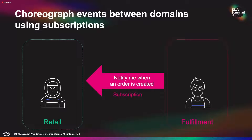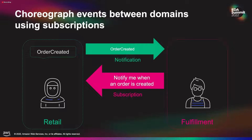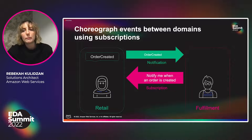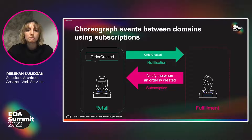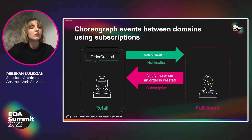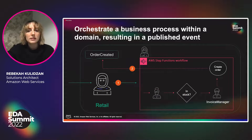When we communicate between bounded business events, we call this choreography. This creates loose coupling between the communication of different domains. Publishers of events cannot have an expectation of how and if that event will be processed by the subscriber. Publishers pull context from an event, adhere to backwards-compatible schema, and successfully publish the event to an intermediary like an event bus. When there are expectations, you're adding tighter coupling to the model. In the pub/sub model, fulfillment subscribes to retail saying 'notify me when an order is created.' When an order is created, the publisher sends that to the subscriber — the retail business sends it to fulfillment. However, the retail business has no awareness of how it's processed in the fulfillment domain.